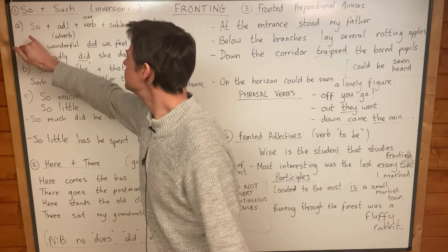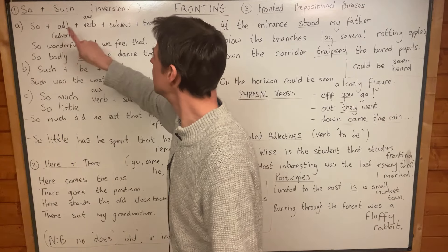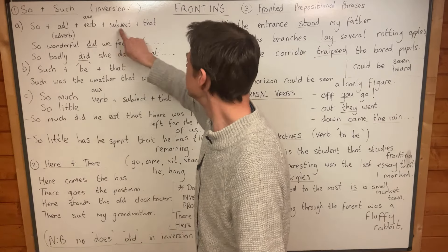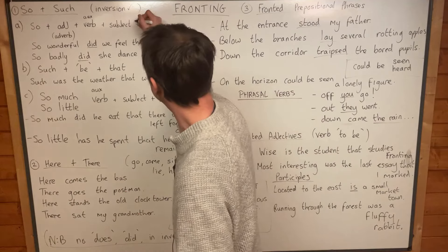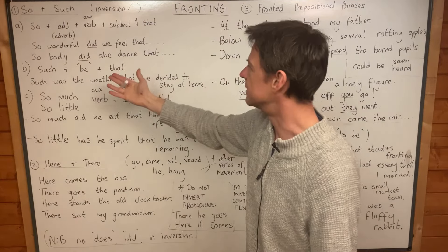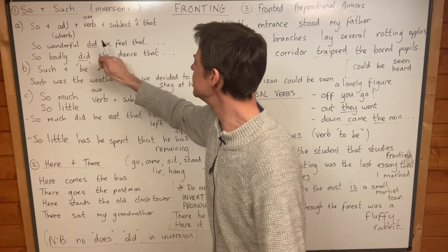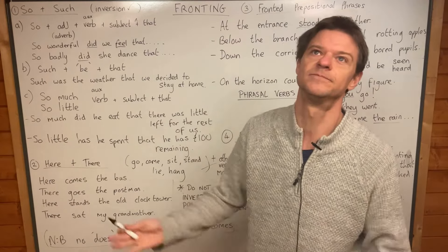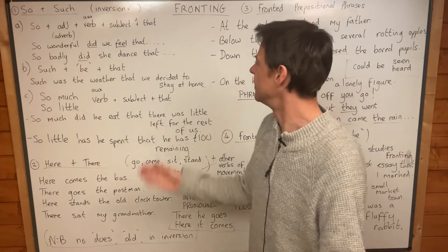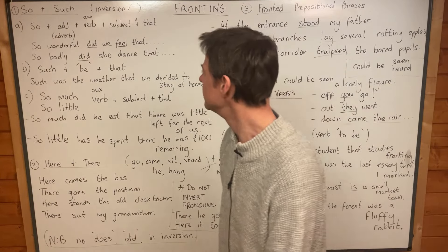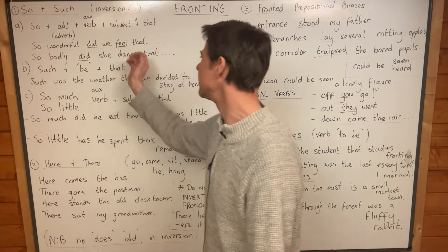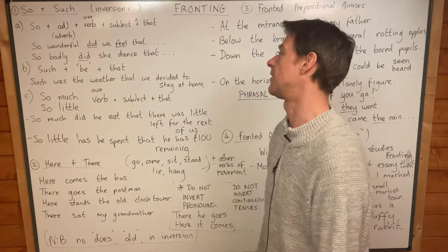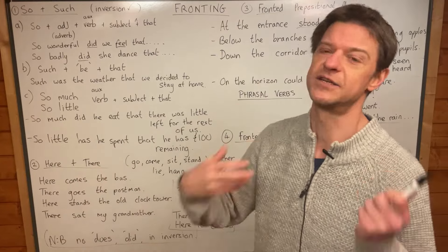So let's do 'so' and 'such' first. The general pattern is: 'so' plus adjective or adverb, plus auxiliary verb ('did', 'do', 'does'), plus subject, plus main verb, plus 'that'. For example: 'So sad did I feel that I didn't want to go out.' Or: 'So wonderful did I feel that I decided to go out and spend lots of money.' You can use 'so' plus adjective or adverb, and if it's in past simple you'll need 'did'.